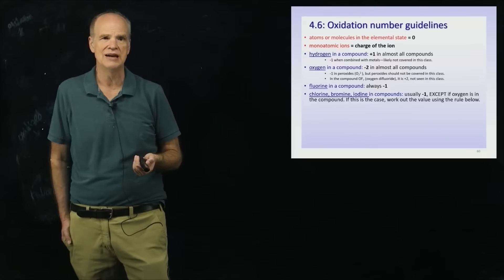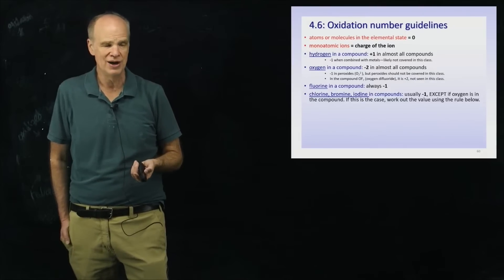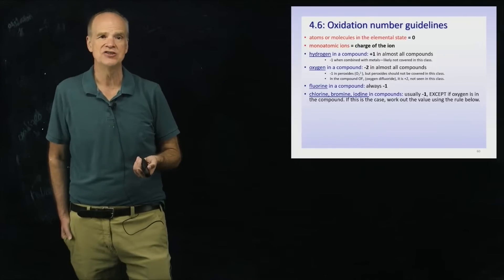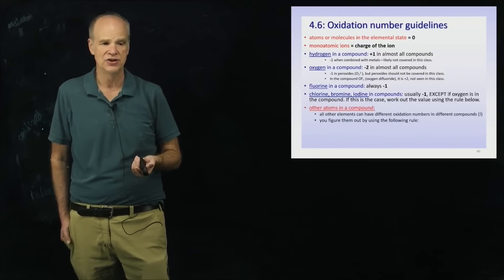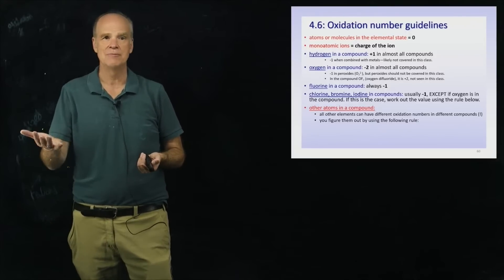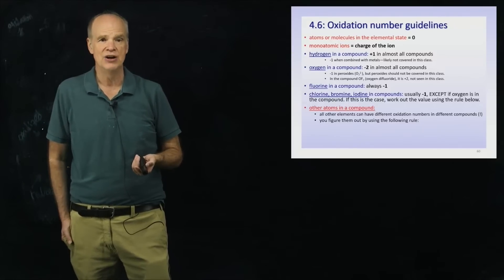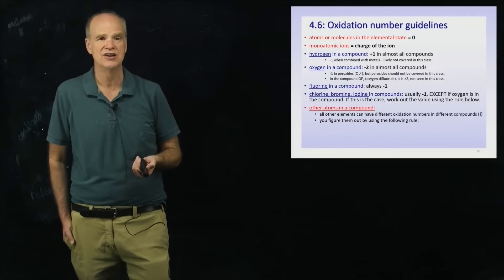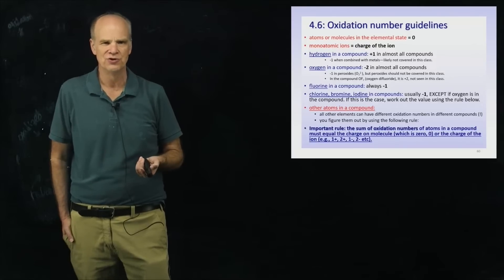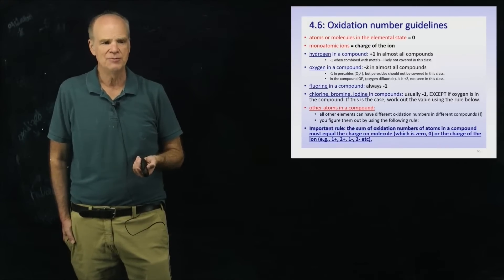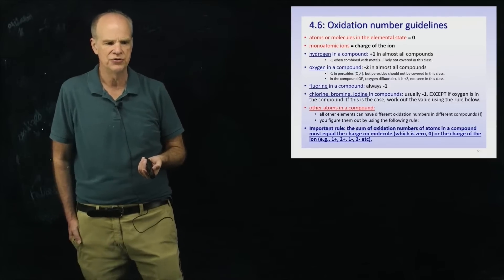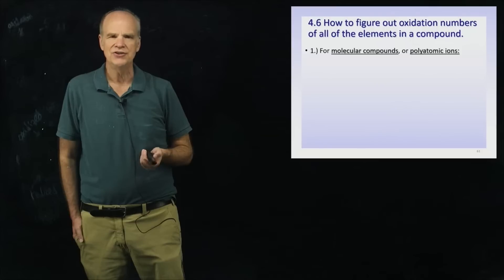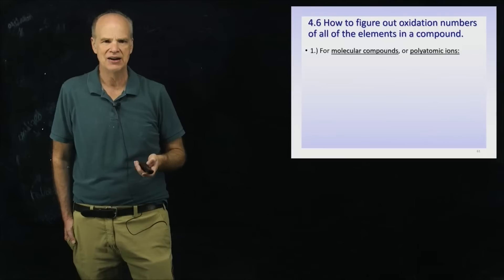How about chlorine, bromine, and iodine? Their oxidation numbers will be negative one unless the compound has oxygen in it. If that is the case, you will have to determine arithmetically what the oxidation number is for chlorine, bromine, and iodine. With all other elements, like carbon, their oxidation numbers can vary depending on the kinds of other elements in the compound, so you'll have to figure out arithmetically what their oxidation numbers are. The sum of the oxidation numbers of atoms in a compound must equal the charge on the molecule, which is zero, or the charge of the ion.